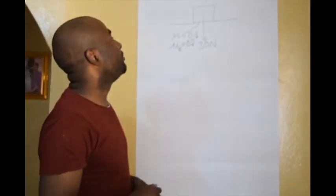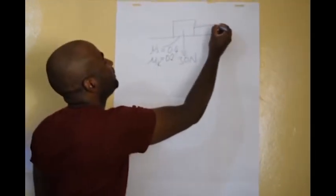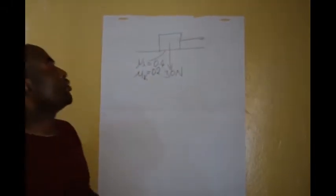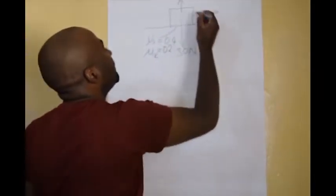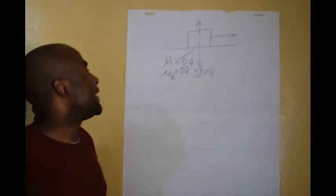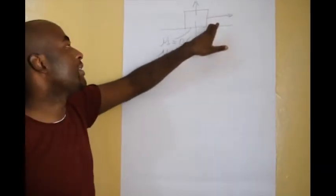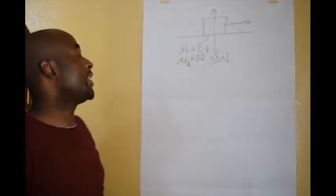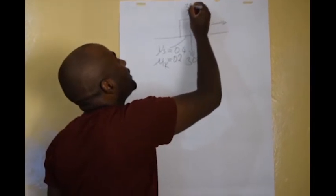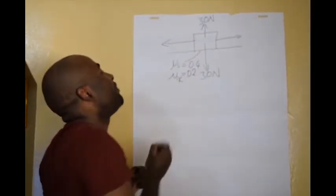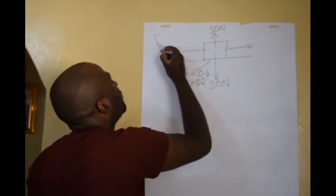So the first thing you need to do is find out what the normal force is. Remember, if the force applied is horizontal, the weight is equal to the normal. The normal force is the force that acts perpendicular to the surface. So upward force equals downward force — this is also 30 newtons.